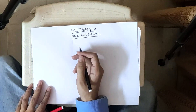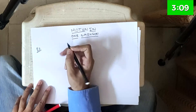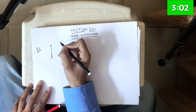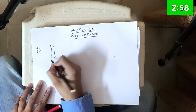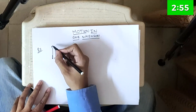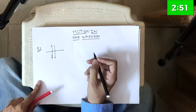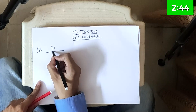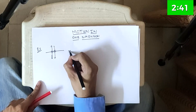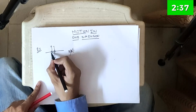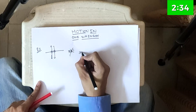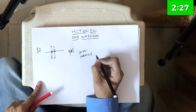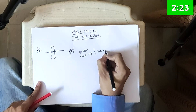Hi everyone, this is Ayush. Let's start with a quick question. Assume there's a particle thrown vertically upwards — it goes up then comes down. In the midway of the paths, will the particle have the same velocity? The answer is no — the particle will have the same speed at those points, not velocity.